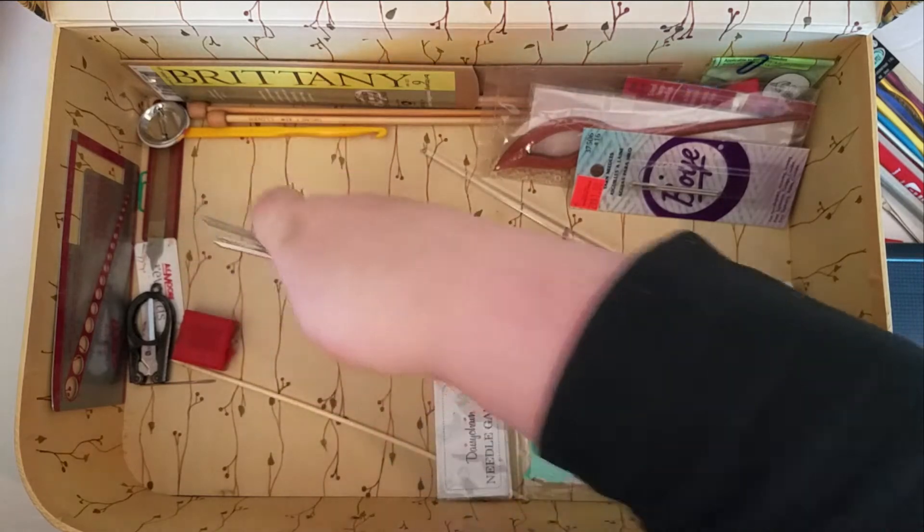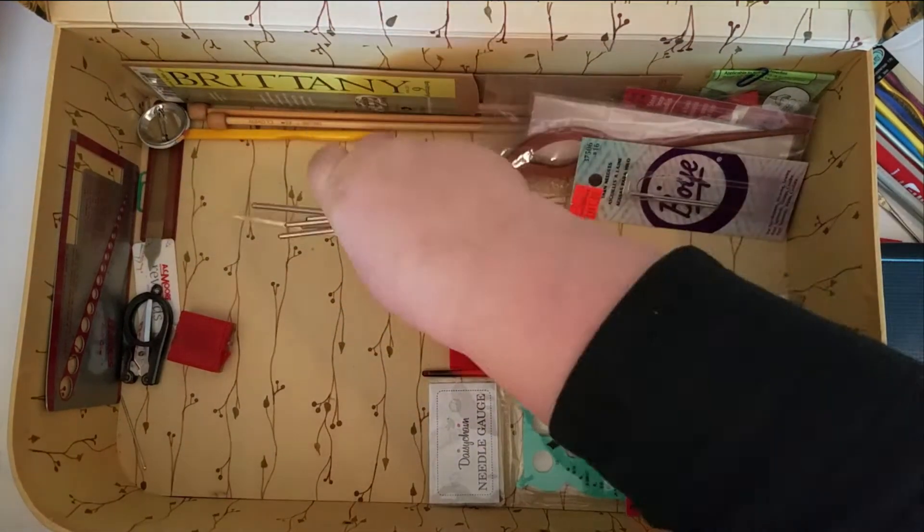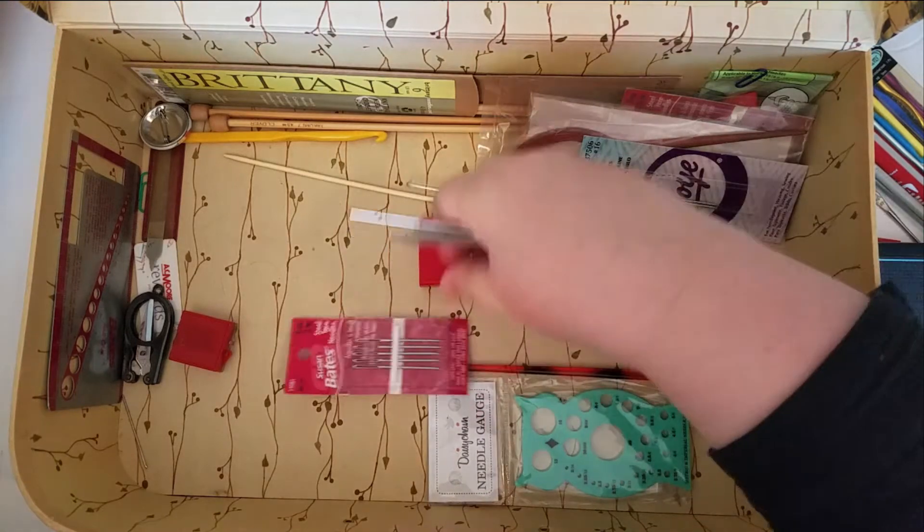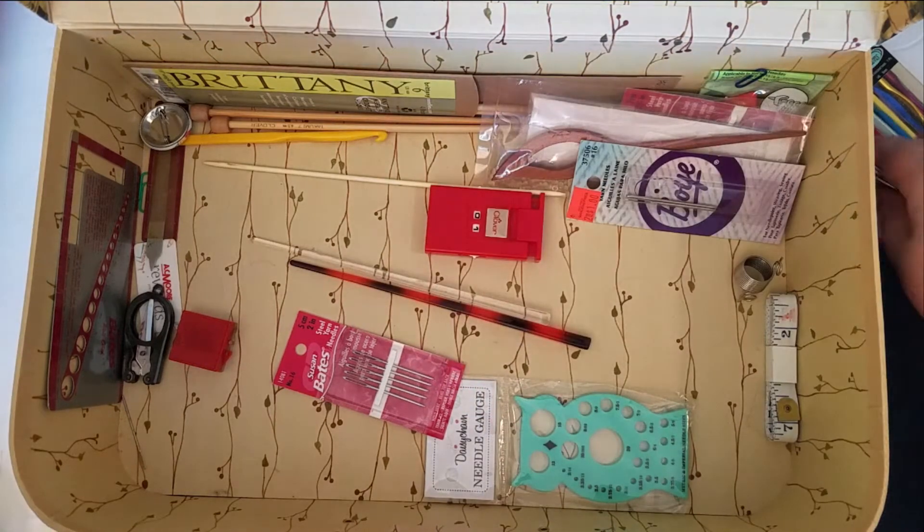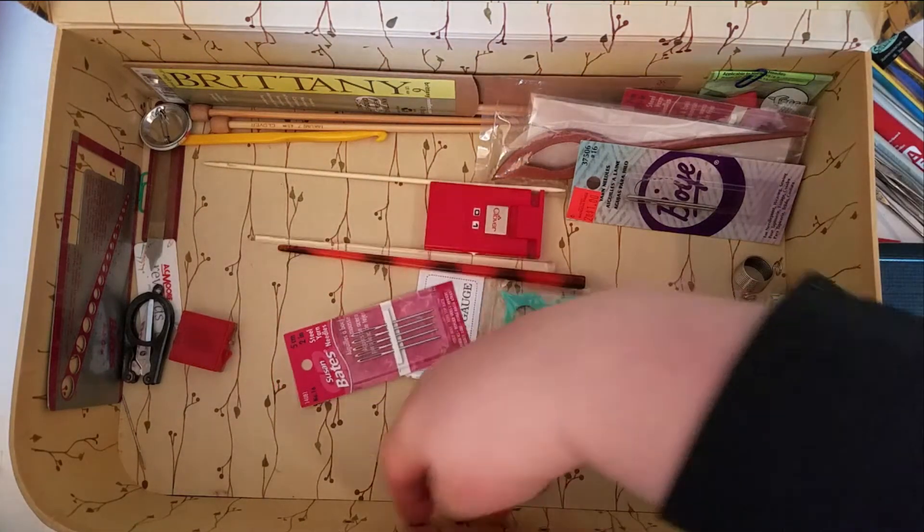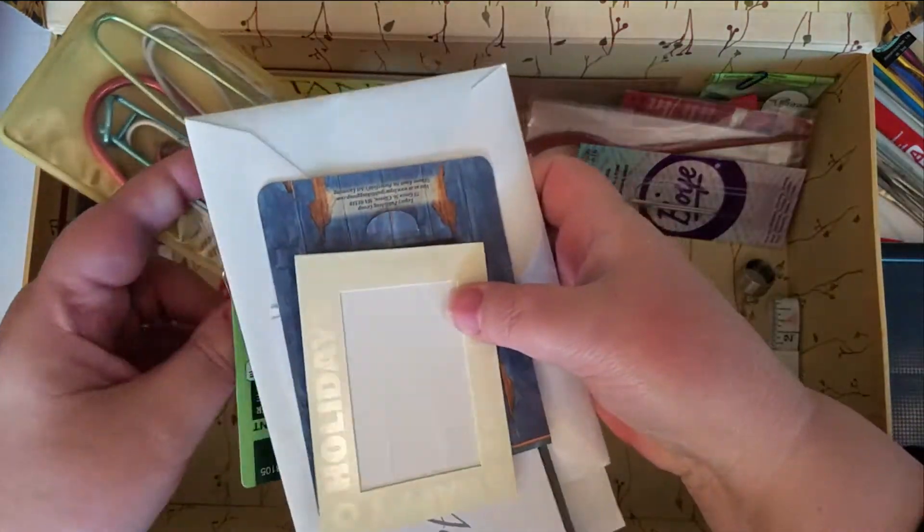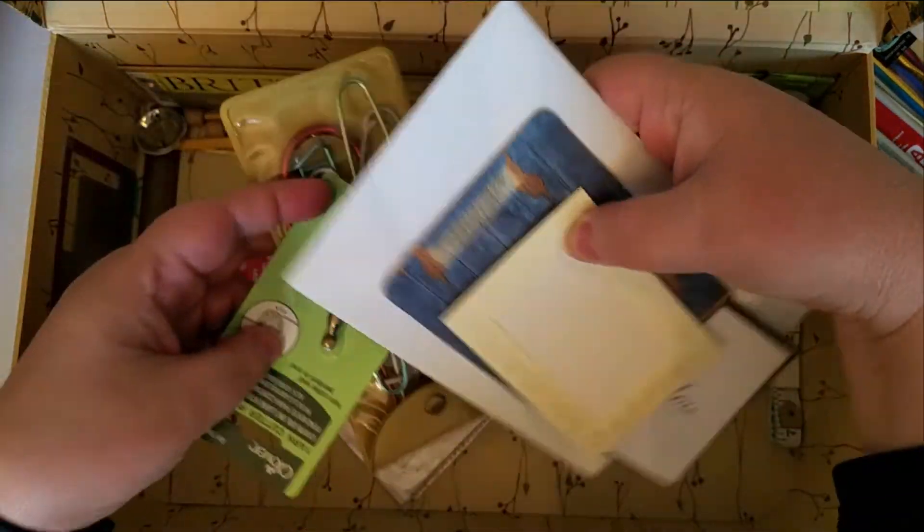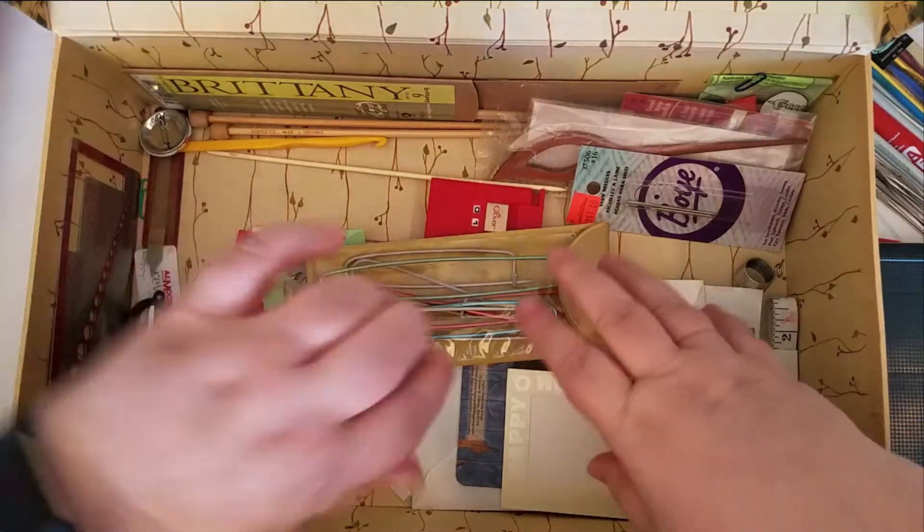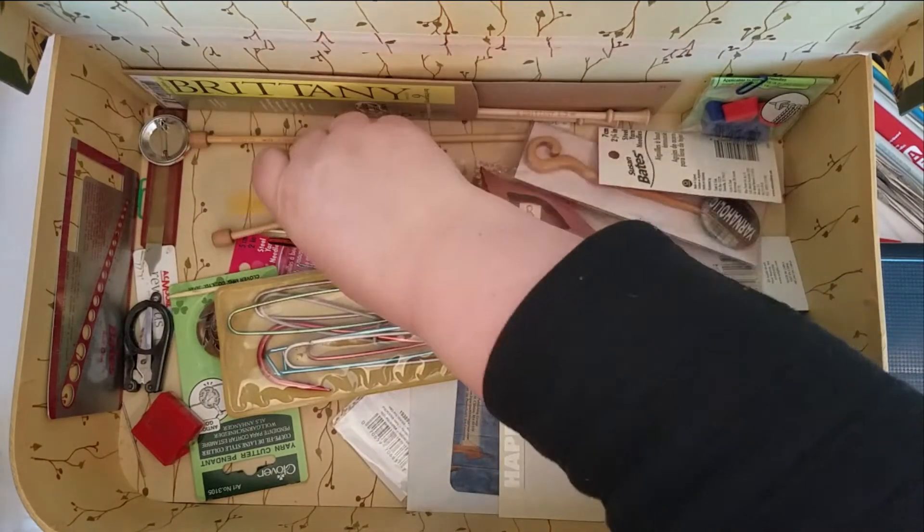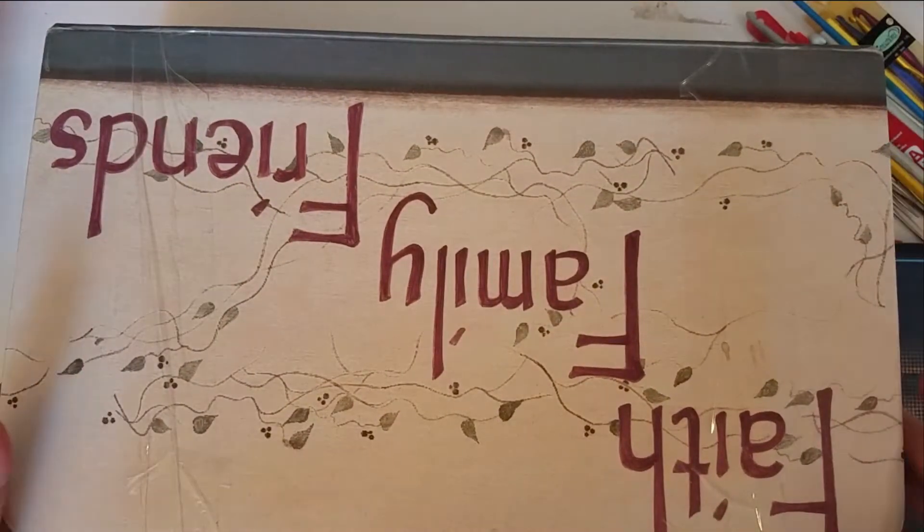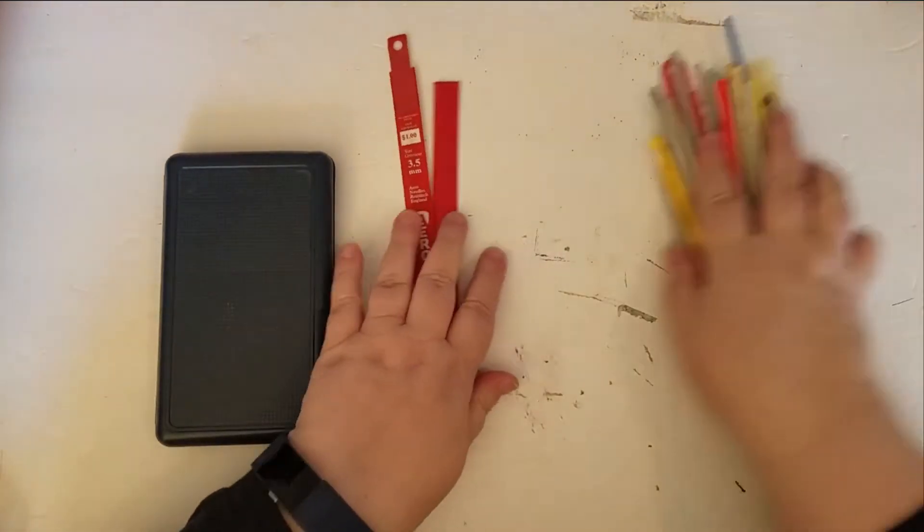There are these steel crochet hooks, that's an extra double point that I missed. Two of these little hair things or shawl pins, whichever I want to use them for. The rest of this are all notions. There's one more hook. Let's get this out of the way and take a look at everything we have here.